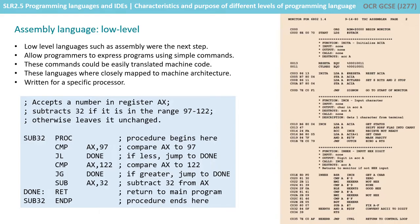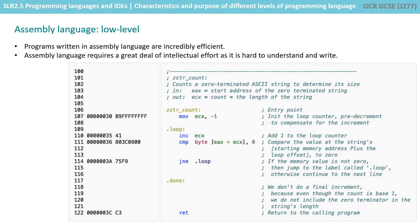These languages closely mapped to the machine architecture, being written for a specific processor, and this is sometimes described as being close to the hardware. The limited speed and memory capacity of early computers forced programmers to write hand-tuned assembly language programs. However, working with the memory directly made them incredibly efficient. It was eventually realised that programming in assembly language required a great deal of intellectual effort, as the code was hard to both understand and to write.